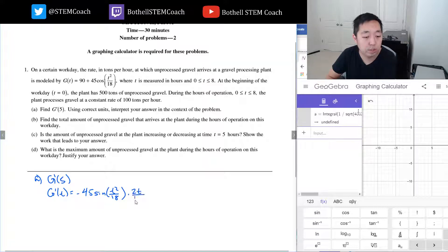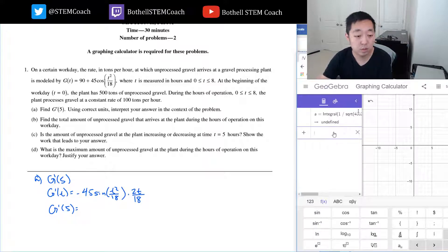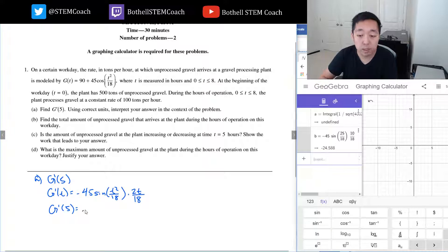t squared over 18, but since the inside isn't t, I gotta multiply by chain rule, 2t, the derivative of the inside, which would be 2t over 18. So then when I plug in 5, this is negative 45 times sine of 25 over 18 times 10 over 18.